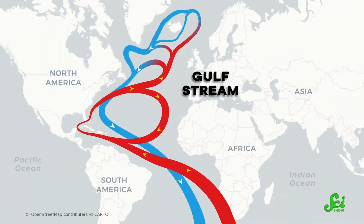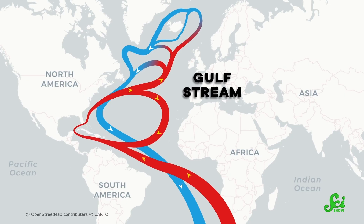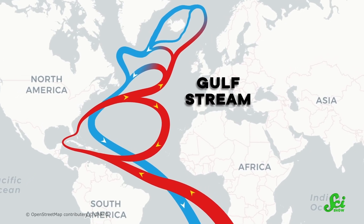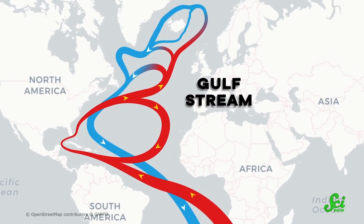So cold, salty water tends to sink, but warm, less salty water rises. The Gulf Stream, which flows along the east coast of North America and into the Labrador Sea, is very salty. But because the Gulf Stream is also warm, its temperature keeps it just light enough to stay at the surface.